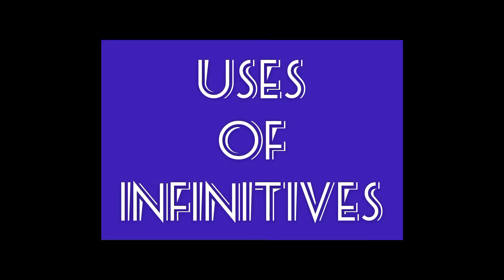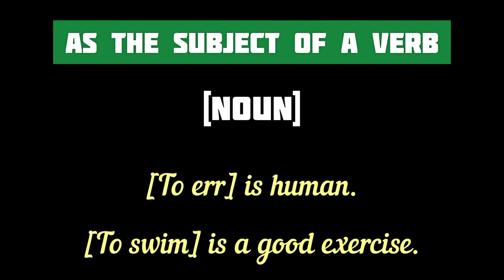Now let's learn the various uses of infinitives in sentences. An infinitive may be used as the subject of a verb — in such a case, it is a noun. For example: 'To err is human.' 'To swim is a good exercise.' In these two sentences, 'to err' and 'to swim' are the subjects and they are both infinitives.